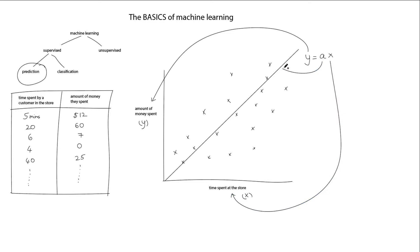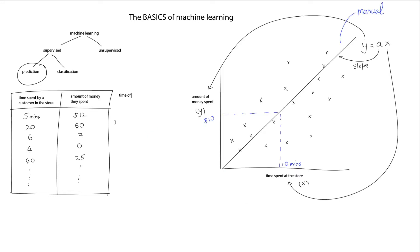Since the slope seems to be close to 1, we can estimate that if the customer spends about 10 minutes in the store they would probably be spending about $10. So we have created a model of the behavior. This was done manually.